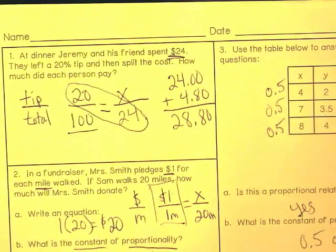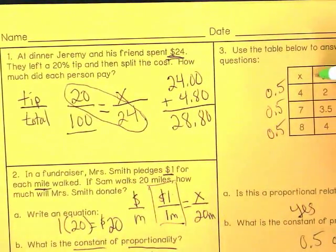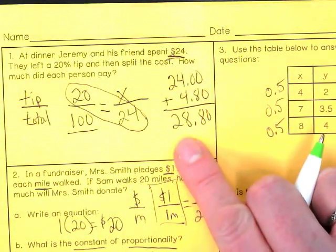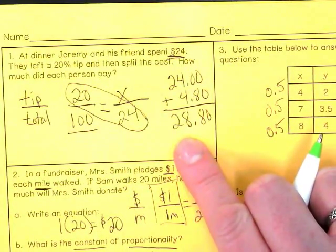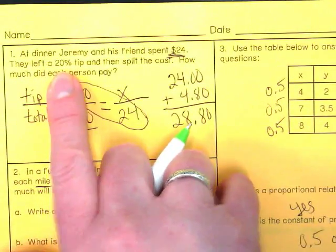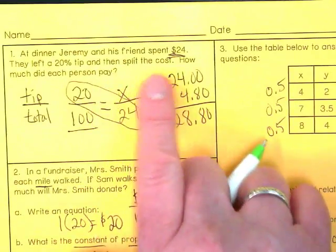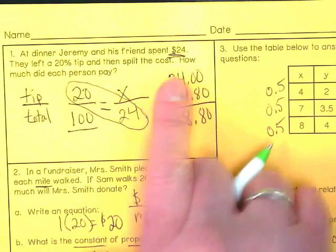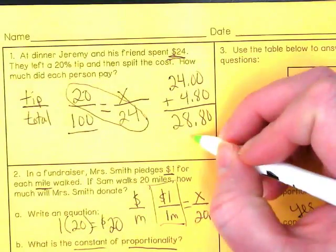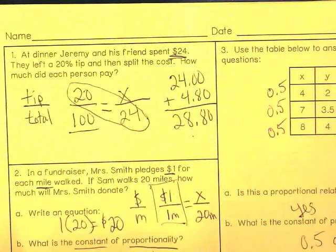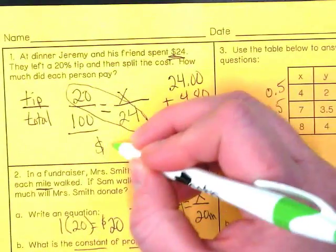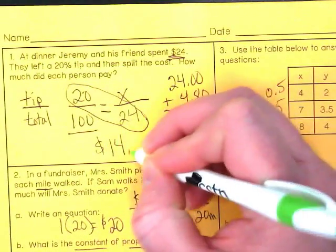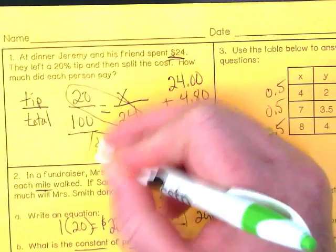Am I finished? This is why this is like, oh, my gosh, this is not a warm-up. This is a good in-depth problem because there's a lot of steps. We're not done. What do we have to do with that $28.80? Divided by 2. Because what is the last sentence? Or here they said, they left a 20% tip and then split the cost. How much did each person pay? Well, what's half of $28.80? $14.40 is how much each person paid.